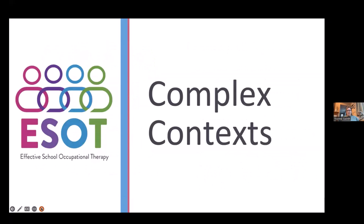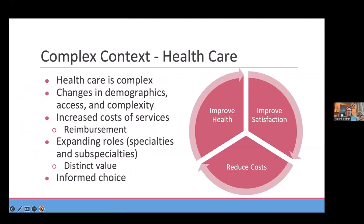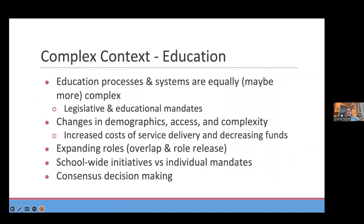We are recognizing that we're working in more complex systems and contexts, starting with healthcare. There's changes in demographics, access, and complexity. Reimbursements are becoming challenging. There's a lot of discussion about what people's roles are and what's your distinct value. And we're seeing the same thing happening increasingly in education as well — our systems are equally as complex and maybe even more complex. We're trying to manage both legislative and educational mandates, changes in demographics and access, and increasing complexity of the services that we're having to provide.